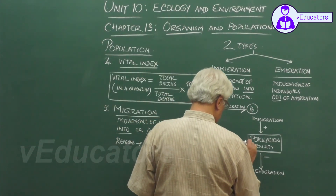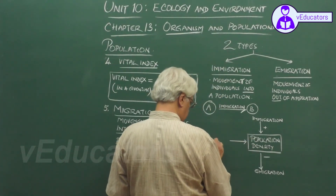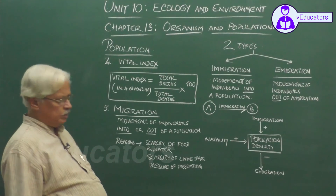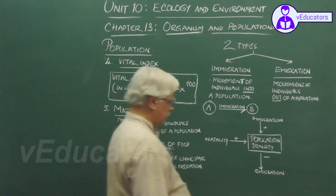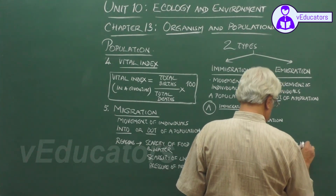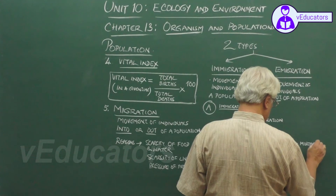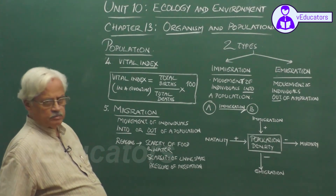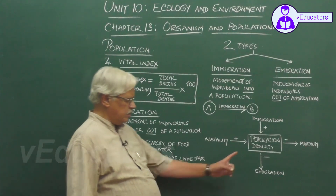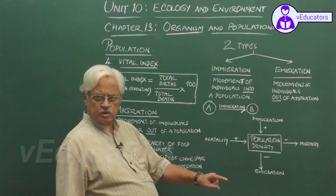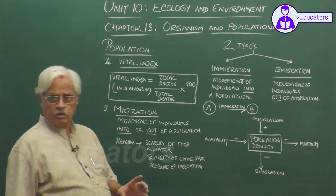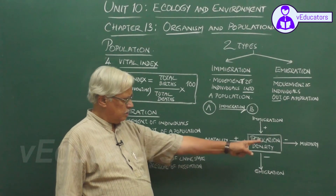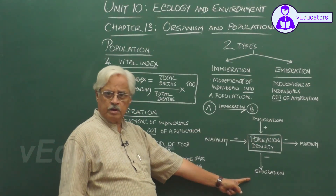Similarly, natality — birth rate — adds to the population, while mortality — death rate — decreases the population density. Population density, as we have defined, is the number of individuals in a given geographical area over a given period of time. It may vary because of these four factors: natality, mortality, immigration, and emigration.